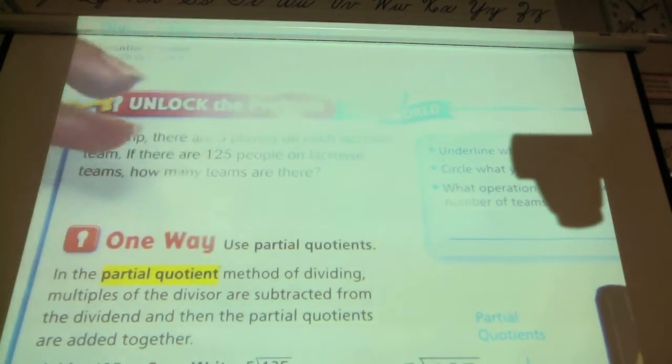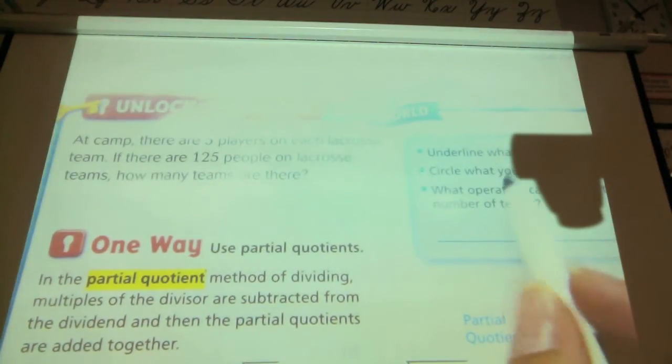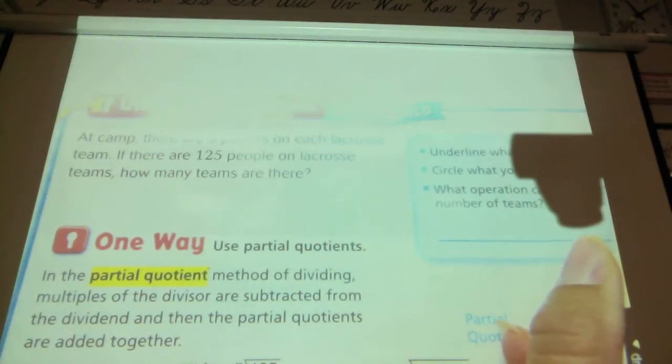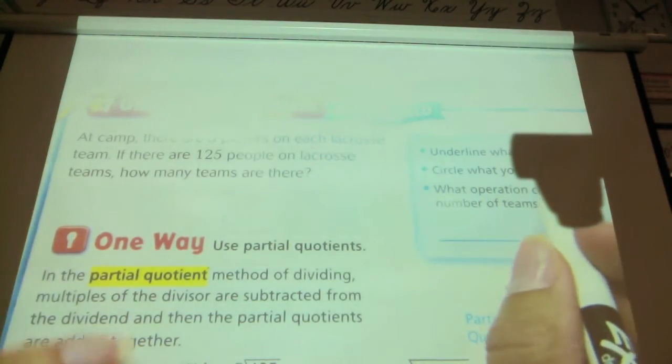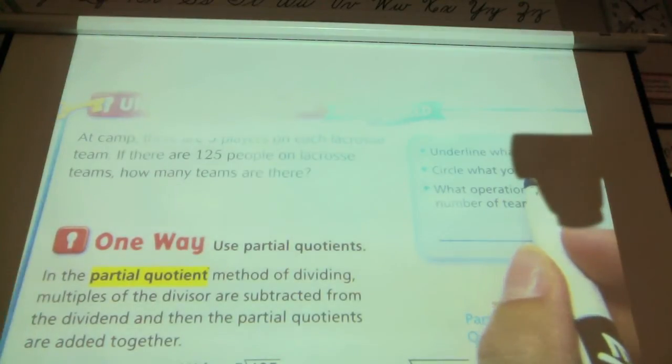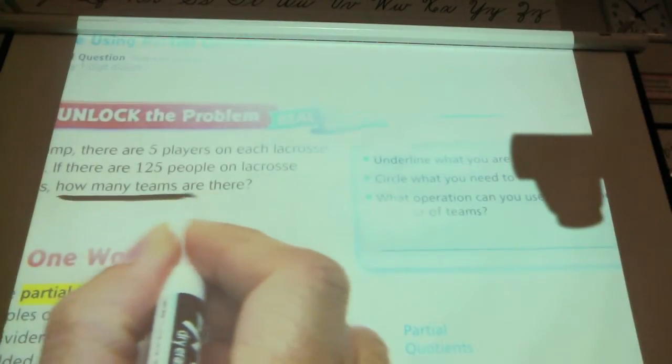We have to figure out what math problem we need to do. It gives us some clues over here of what we need to do. The first one is saying, underline what you are asked to find. So what is it asking us to find? How many teams are there? Go ahead and do that right now.